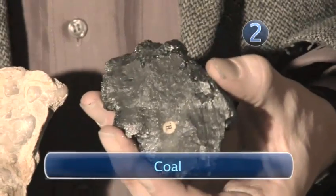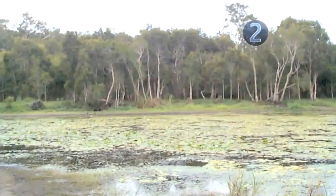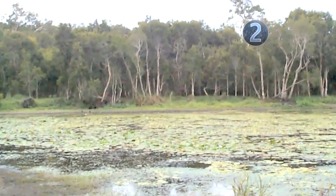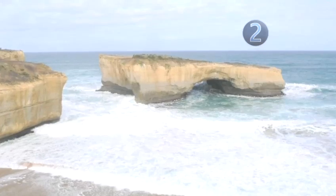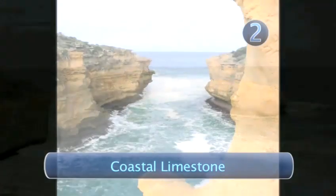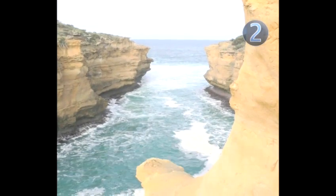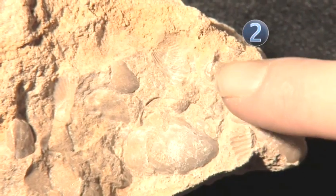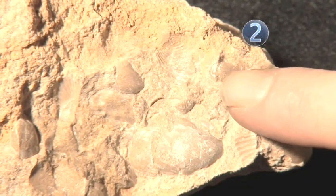So coal, for example, built up from lots of dead vegetation material — bits of trees, bits of ferns — laid down in a swamp. Whereas this is a limestone, and it consists of carbonate minerals. And those carbonate minerals grew originally in the shells of sea creatures. And you can see here these shellfish fossils on the surface of this rock.